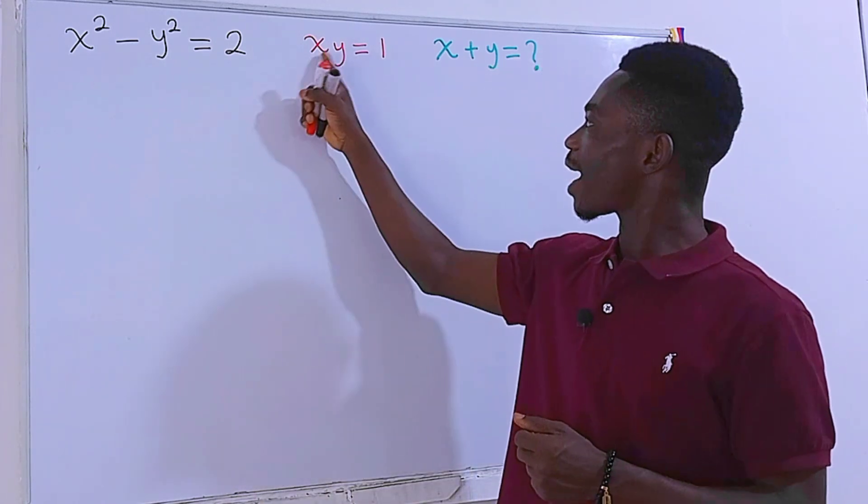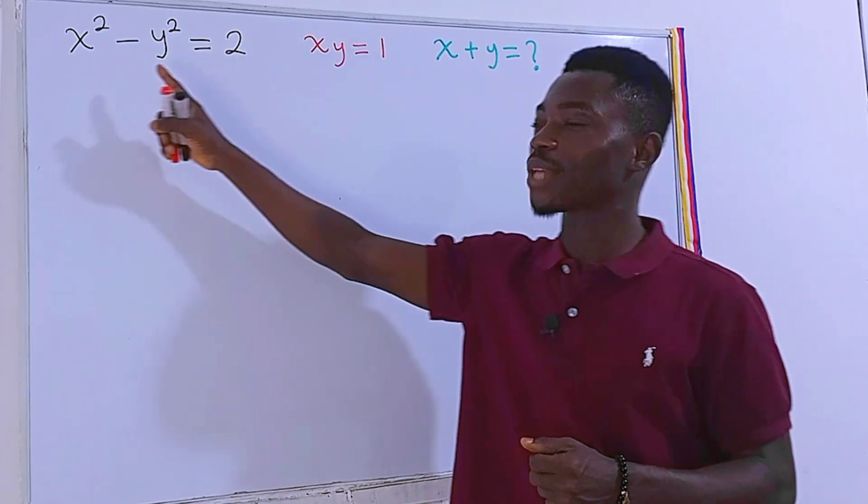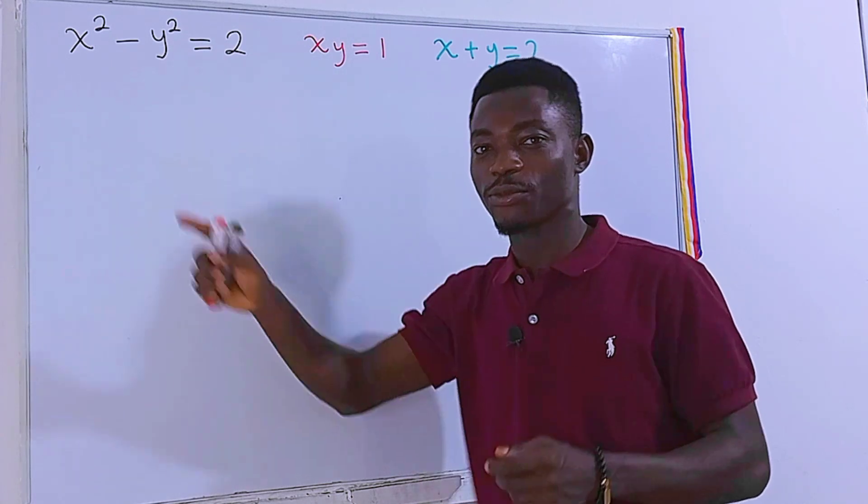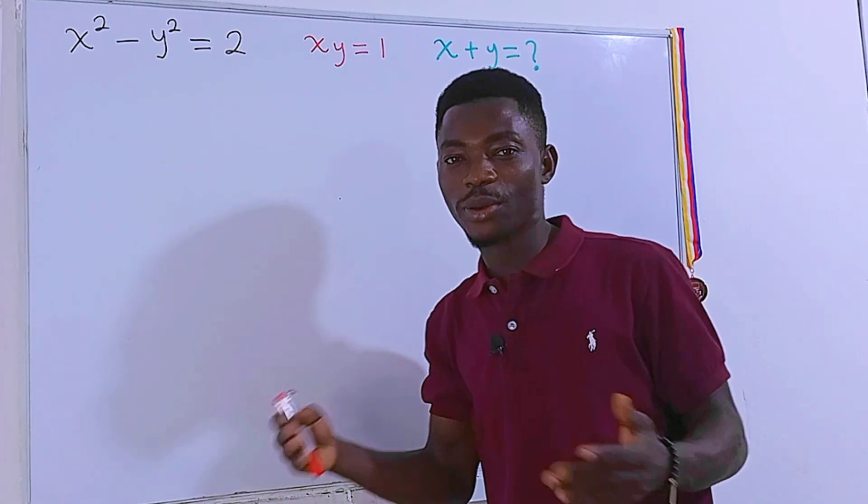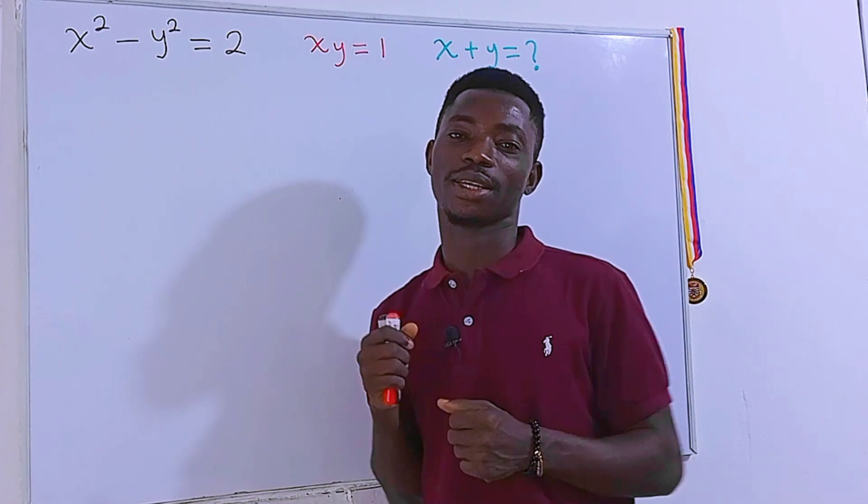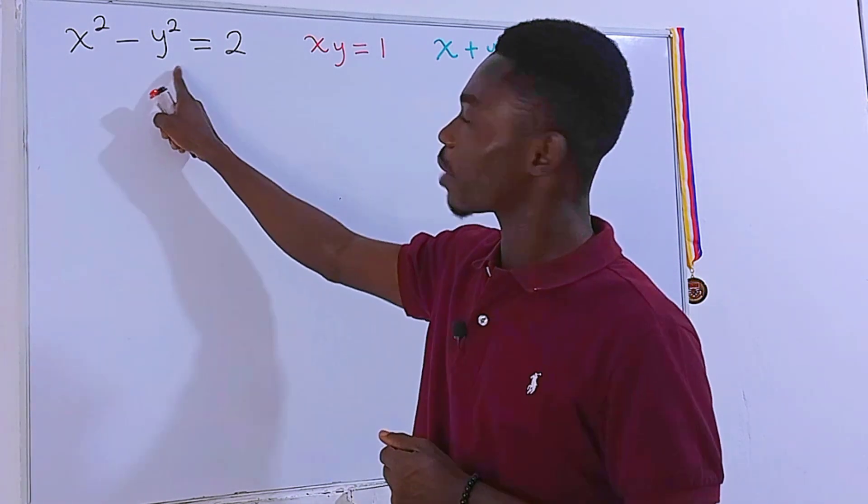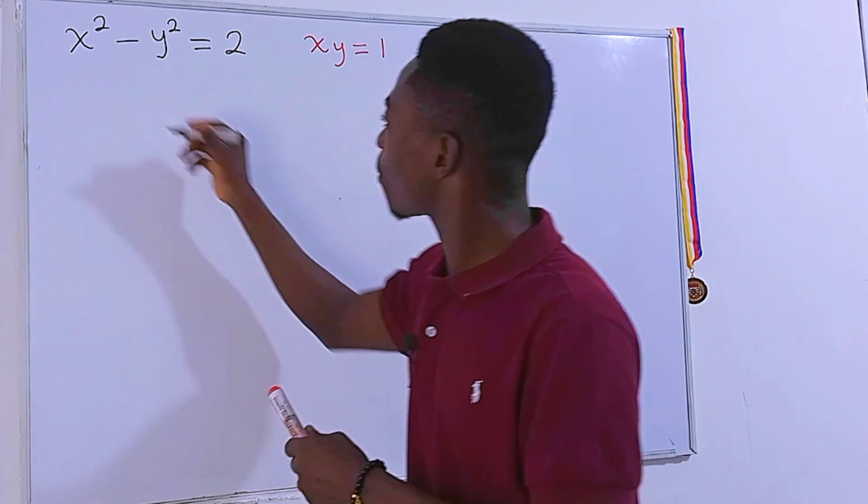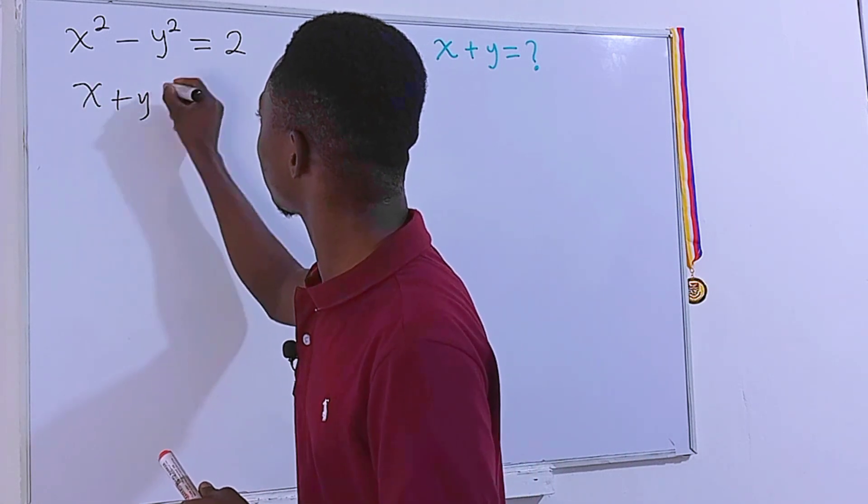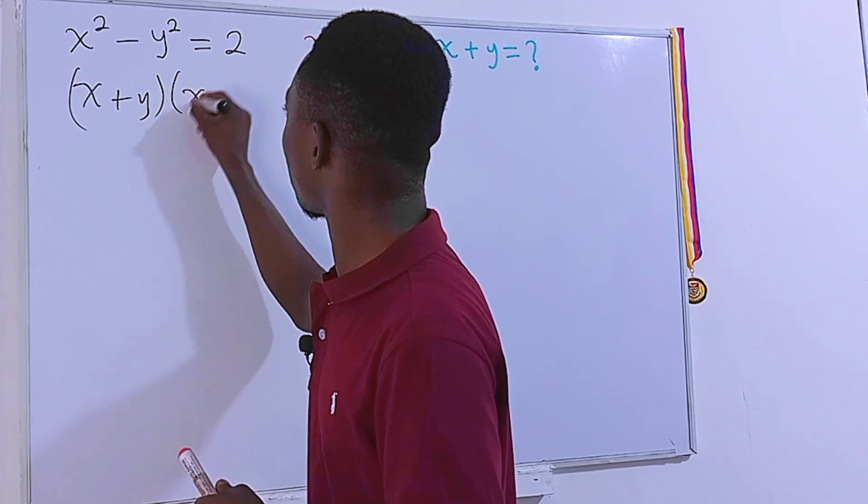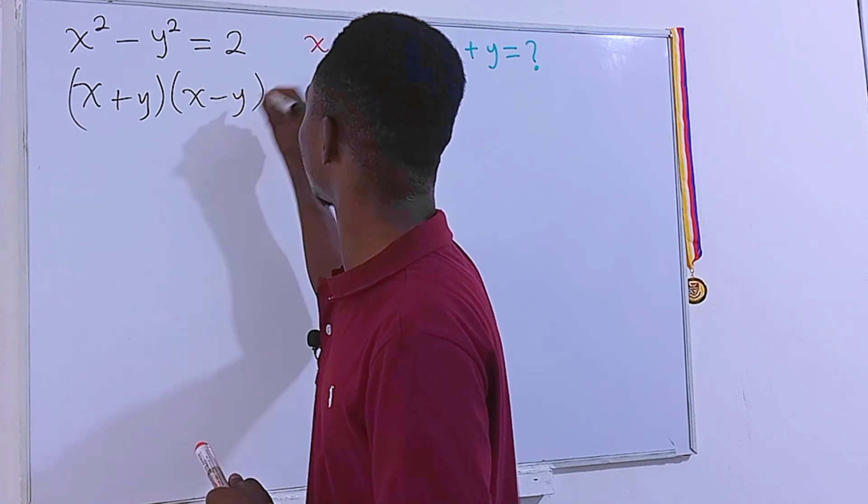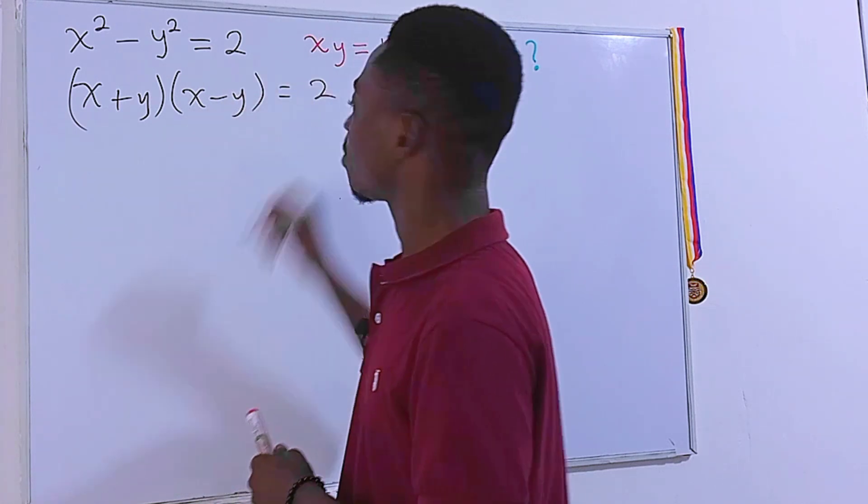In fact, we can make x the subject from here and then substitute that right into this equation and then find y. But how about we do math for fun? We have the difference of 2 squared right here. So I can write this as x plus y times x minus y, and this is equal to 2.